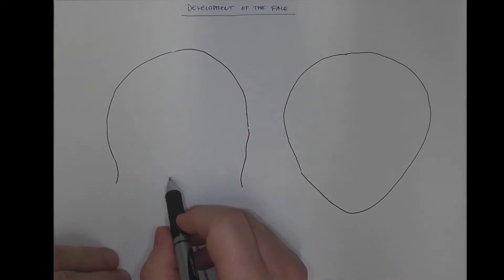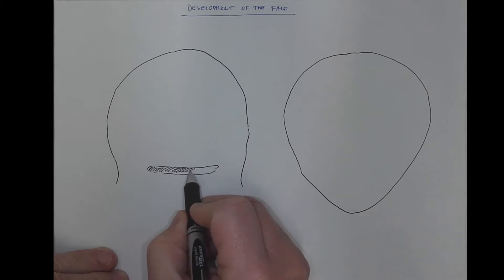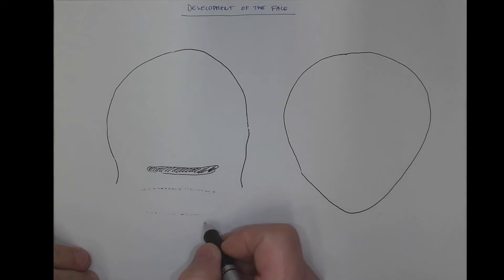Let me start with the stomodium, which at first is a widely opened entrance to the mouth cavity. Below stomodium we got the mandible from the first mandibular arch. Then there would be a second ectodermal cleft and so on, but we don't care now.